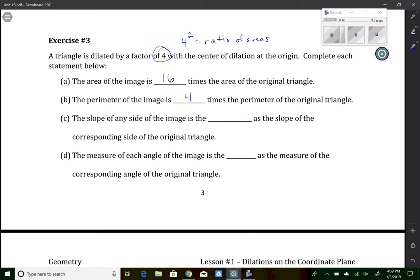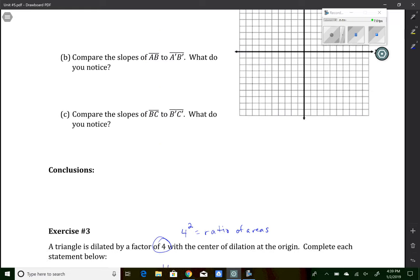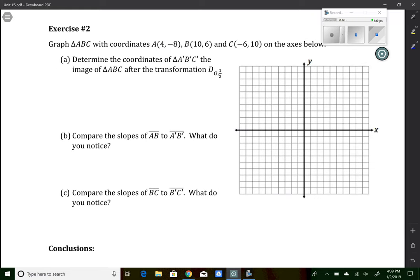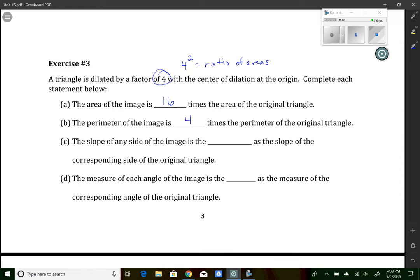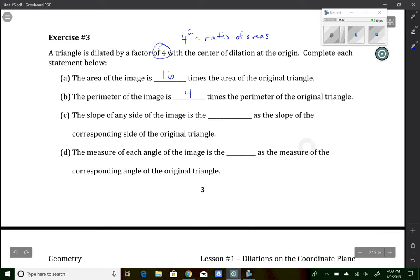Now part C says the slope of any side of the image is the blank as the slope of the corresponding side. So one of the things that we did in example number 2, if you look back at your example number 2, you can see that the segments that are corresponding to each other are parallel to each other. Parallel lines have the same slope. That's something you learned in Algebra 1.